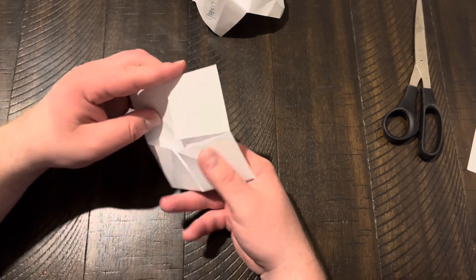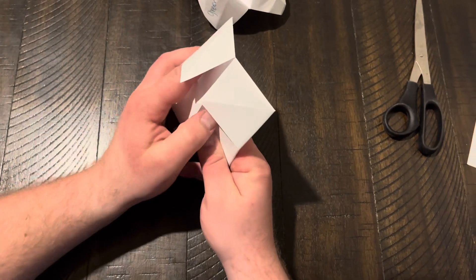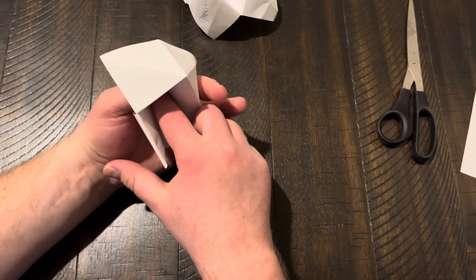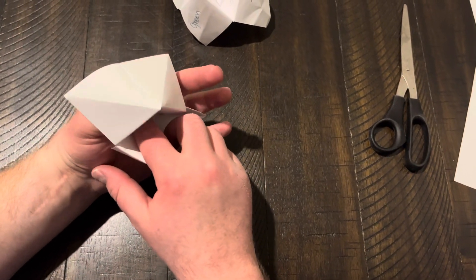Then you're gonna do the same thing to the other side. Index finger, thumb, push down in the middle so that it folds the right way.